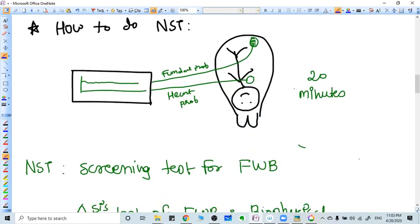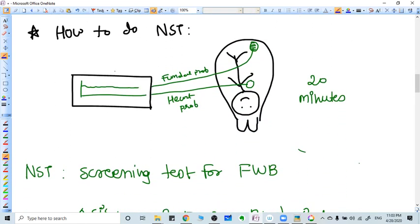Now, how we do the NST? The CTG machine has two probes. The one probe is fundal probe that measures the uterine contraction. The second probe is fetal heart probe which measures the fetal heart.